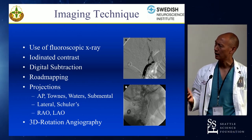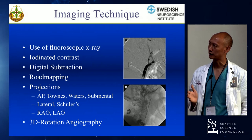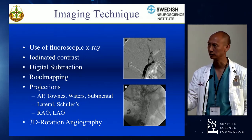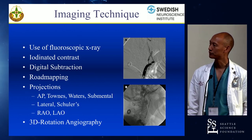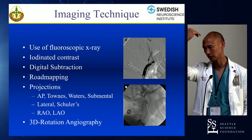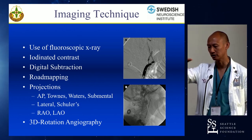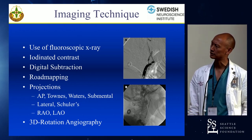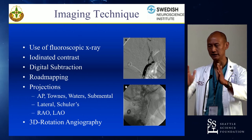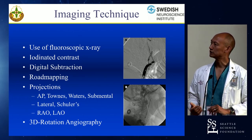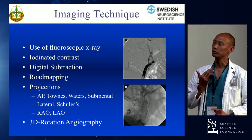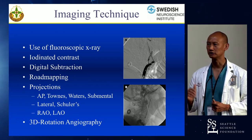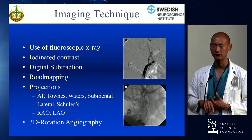A true frontal or AP view will be useful if you want to look at the basilar trunk itself, the vertebrobasilar system. A true Towns view actually brings your orbits down to the level of the floor of the frontal fossa, and that's very useful to lay the PCAs out. Waters and submental view: a submental view will be appropriate, particularly with an oblique of one side or the other, to look at the anterior communicating segment itself. The submental view is essentially looking up the chin.